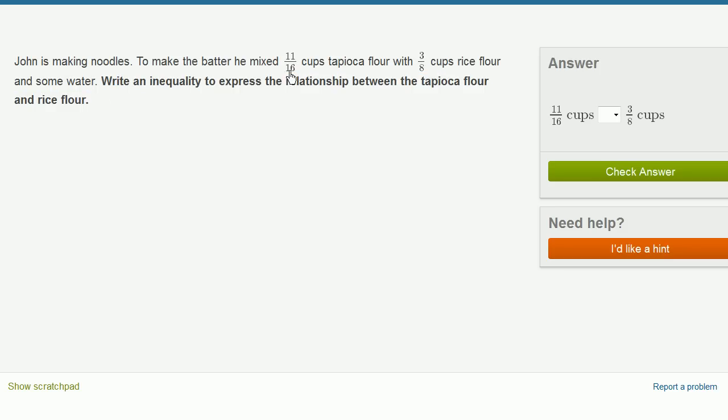So we're really comparing 11 sixteenths cups of tapioca to 3 eighths cups rice flour. So we're really comparing these two fractions. And at first, it might seem hard to compare. You have different denominators. But 3 eighths could easily be converted to a fraction with 16 as a denominator. What would you do?